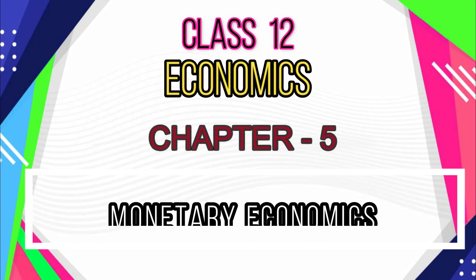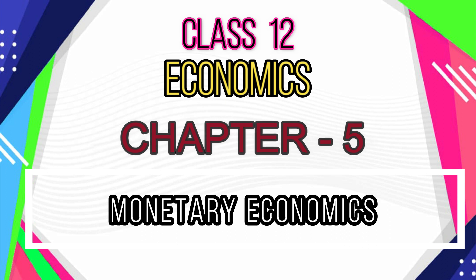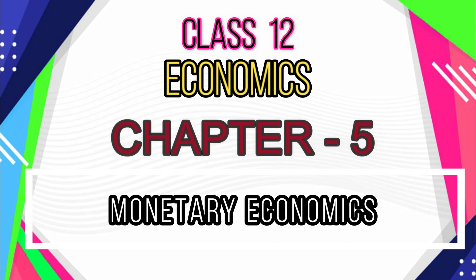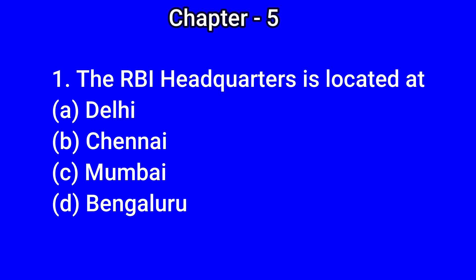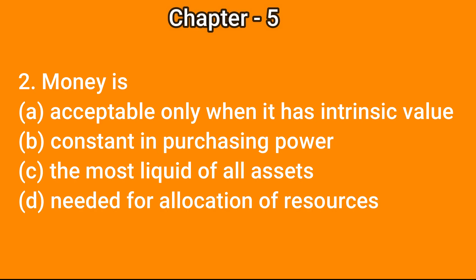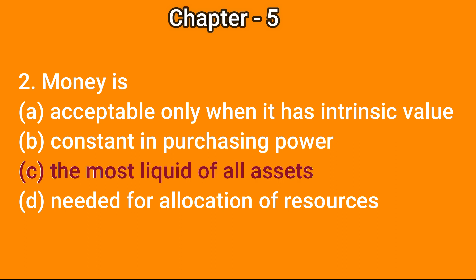Dear students, now we are going to learn the objectives of Chapter 5, Monetary Economics. Question number 1: The RBI headquarters is located at — A) Delhi, B) Chennai, C) Mumbai, D) Bengaluru. The correct answer is C) Mumbai. Question number 2: Money is — A) acceptable only when it has intrinsic value, B) constant in purchasing power, C) the most liquid of all assets, D) needed for allocation of resources. The correct answer is C) the most liquid of all assets.